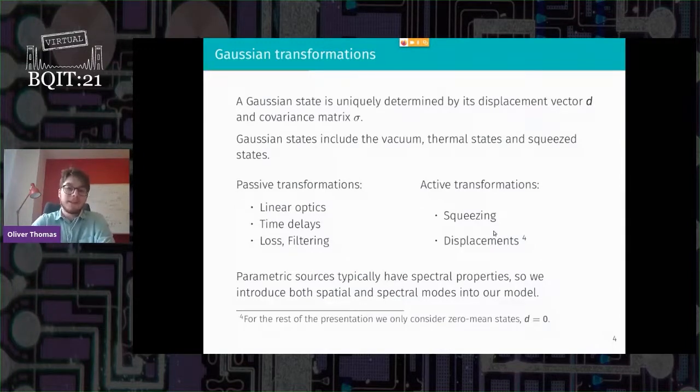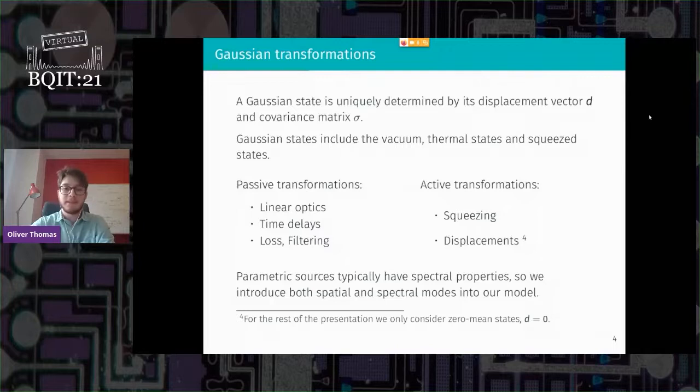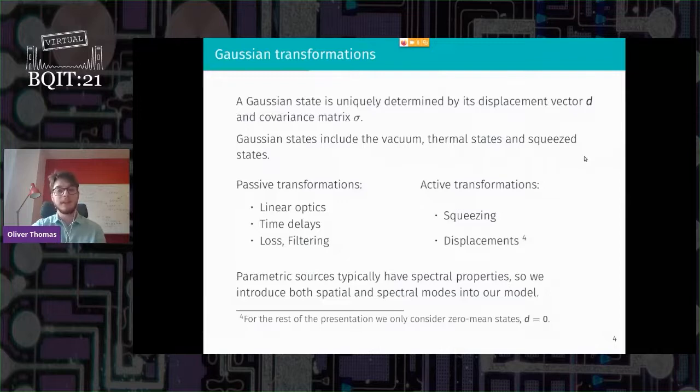So Gaussian transformations. A Gaussian state you can represent with its characteristic function or Wigner function, but the representation we use is a displacement vector and covariance matrix. The displacement vector d is a 2n size vector and the covariance matrix is 2n by 2n matrix. So Gaussian states such as the vacuum has the identity covariance matrix. Thermal states are diagonal so they can be greater than identity, and then squeeze states are the other kind of flavor of Gaussian states.